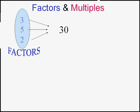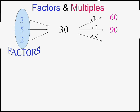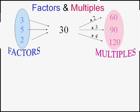Whereas multiples, a multiple of 30 is a number that 30 goes into. 60 is a multiple of 30. I multiplied by 2 to get 60. 90 is a multiple of 30, 120 is a multiple of 30. There are way more multiples of a number than there are factors. In fact, there's an infinite number of multiples.